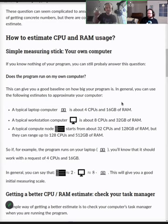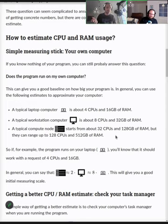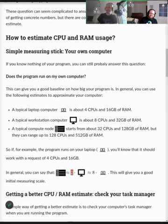To get another estimate of typical compute node sizes: cluster nodes are roughly equivalent to about eight laptops. They have from 32 up to 128 processors and from 128 to 500 gigabytes of RAM. You could say one compute server is about four desktops or eight laptops — those are the ballpark numbers you can use to estimate.